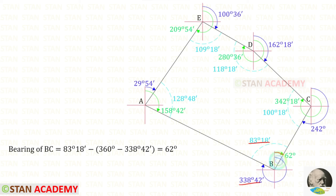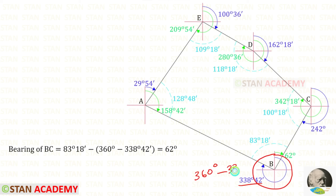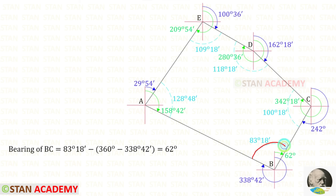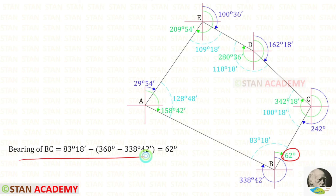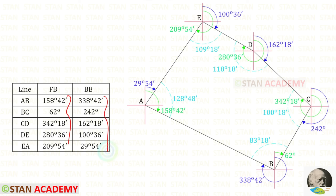Using the interior angle at B and BA (338° 42'), we can find the fore bearing of BC as a check: 360° − 338° 42' gives this angle, and subtracting the interior angle gives BC = 62 degrees — which matches the known correct value. So our calculations are confirmed correct. All corrected bearings have now been entered, and for every line the difference between fore bearing and back bearing is exactly 180 degrees.